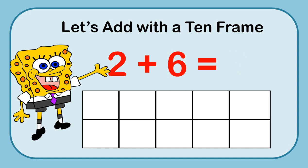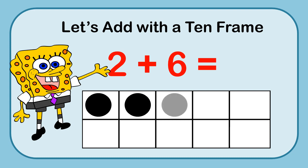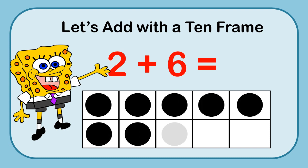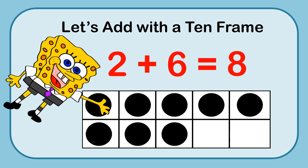2 plus 6 — you should already have this! Let's go ahead and put 2 in there and then 6 more: 1, 2, 3, 4, 5, 6. I see that I have 5. So I'm going to count up from 5: 6, 7, 8. So 2 plus 6 equals 8.